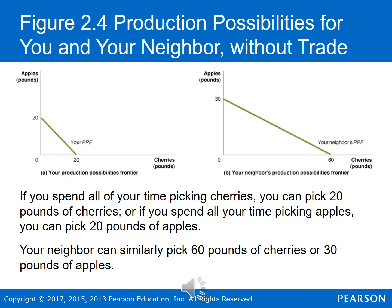Your production possibility frontier curve can be represented by the figure on the left. If you focus on apples, you can pick 20 apples and zero cherries. And if you pick 20 cherries, you'll pick zero apples. The line connecting those two points is your production possibility frontier.